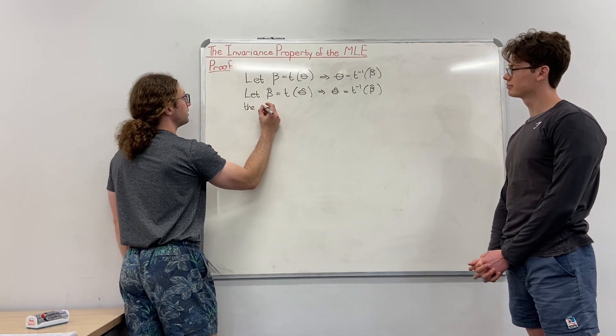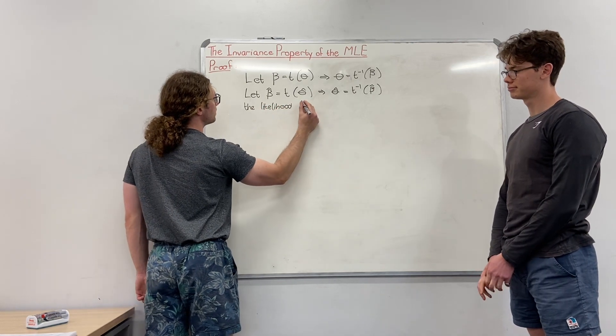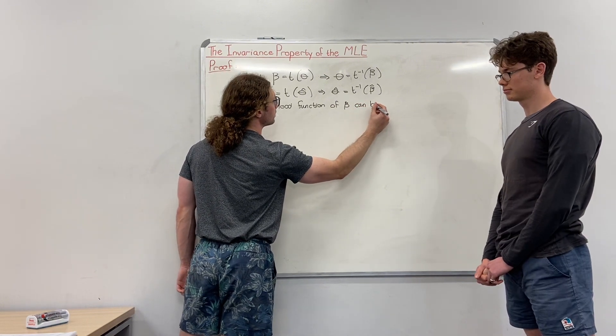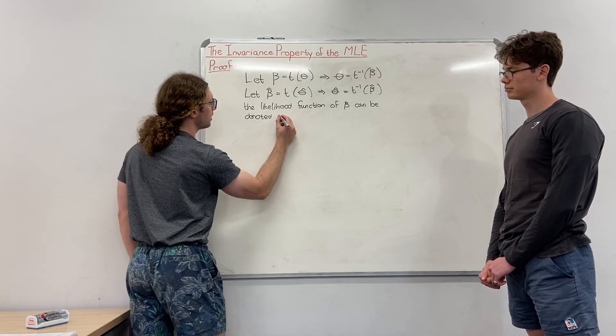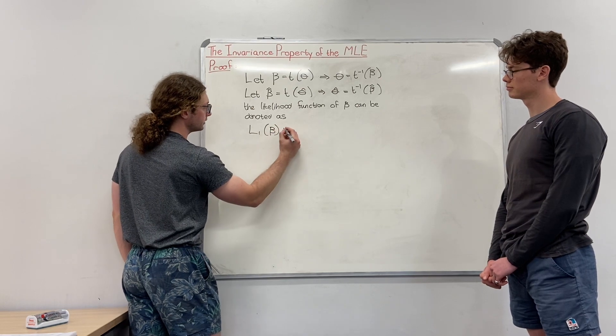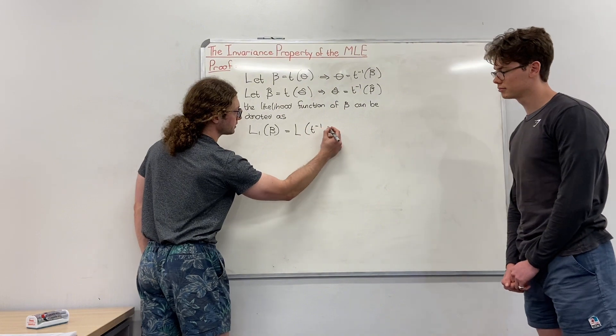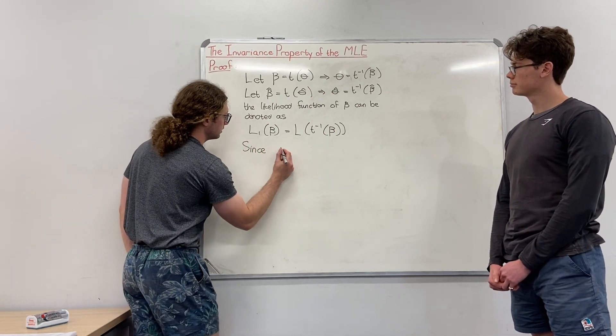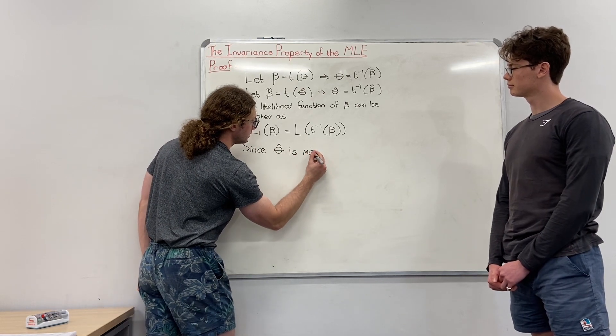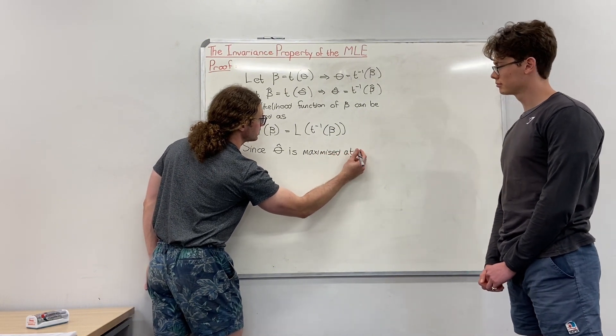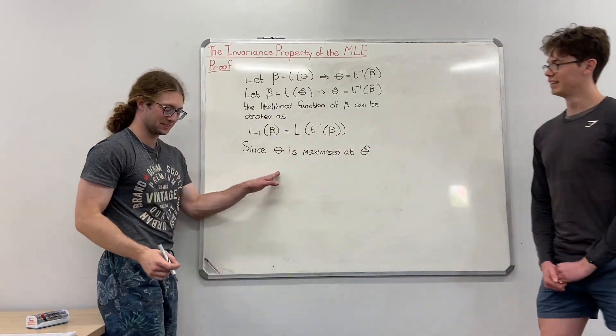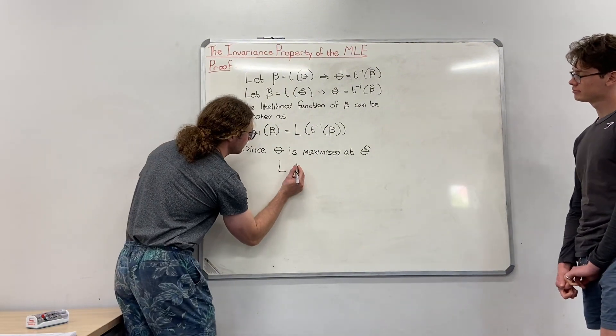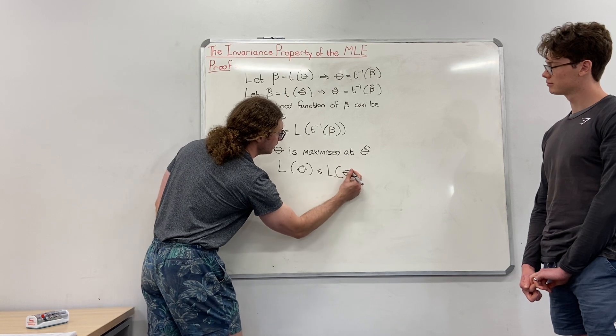Then the likelihood function on beta can be denoted as L1 beta equals L t inverse theta. Then since theta is maximized at theta hat, the likelihood of theta will always be less than the likelihood of theta hat.